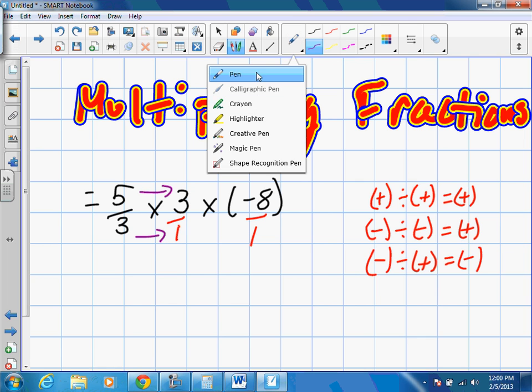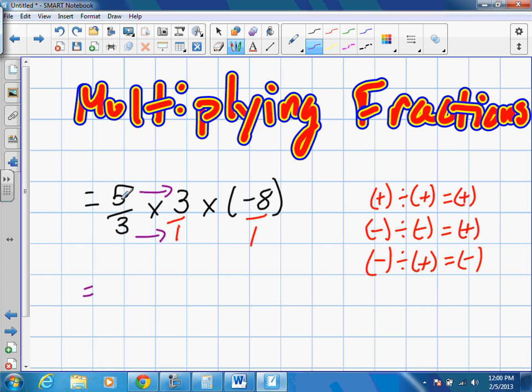So when we simplify the first pairing, 5 times 3, anyone know? Great. 15. And 3 times 1, 3. Then we're going to be multiplying by negative 8 over 1.